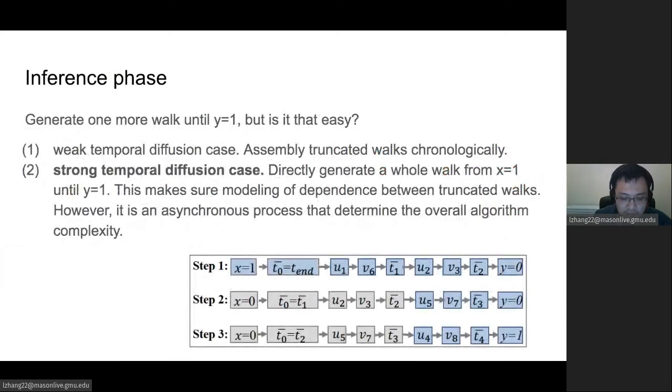In the inference phase, we can think about just generating one walk until Y equals one, but isn't that too easy? There are two cases we need to think about. First is the weak temporal diffusion. We can just assemble all the truncated walks chronologically. Another case is strong temporal diffusion case. We directly generate a whole walk from X equals one until Y equals one. This makes sure that the modeling of dependencies between truncated walks.